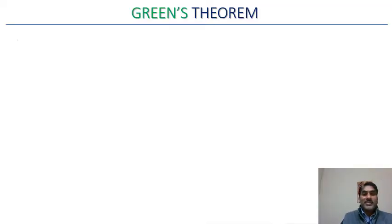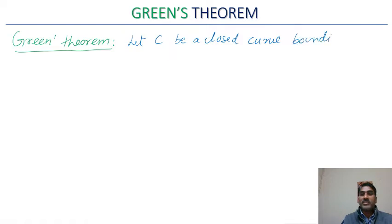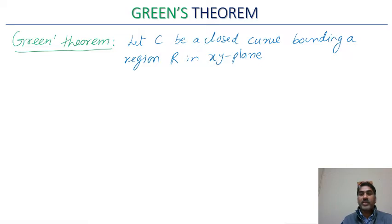Green's theorem — you can see I have written 'Green' in green color, but this has nothing to do with the color. The theorem is named after a famous scientist. Let us state Green's theorem. The theorem may be stated on any plane — XY, XZ, or YZ — but specifically we learn it for the XY plane, and it can be done in any similar plane.